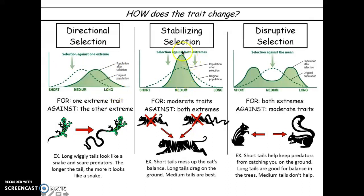Now most of the population would have a medium-long tail rather than the initial medium tail. There's no short tail anymore — we have some medium-short tail and some really long tail, but virtually none of the short tail. We call this directional selection because the bell curve shifts and the characteristic within the population shifts toward a certain extreme — in this case toward the long extreme. If you don't quite get it, there's an additional video at the end to help.